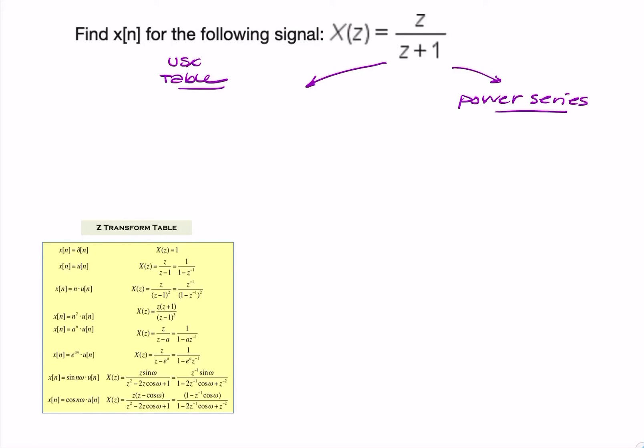So using the table, we simply look for z over z plus a in the table. And the closest I can find is that, z over z minus a. So we have that with a equals minus 1, because you've got z plus 1, so it's like saying z minus minus 1.